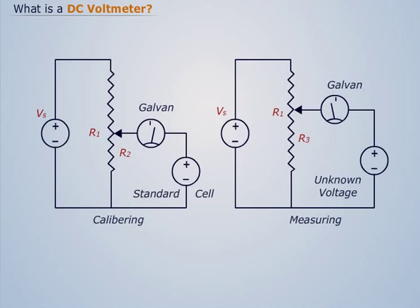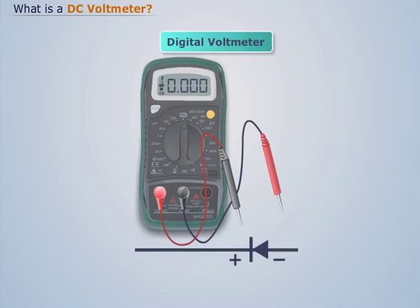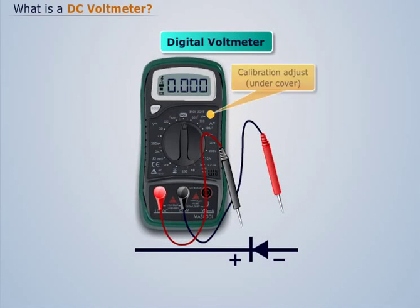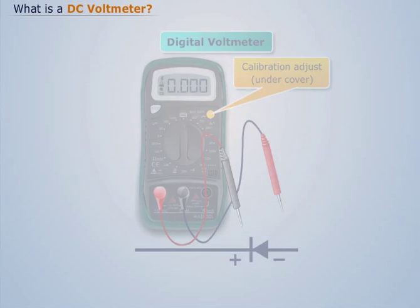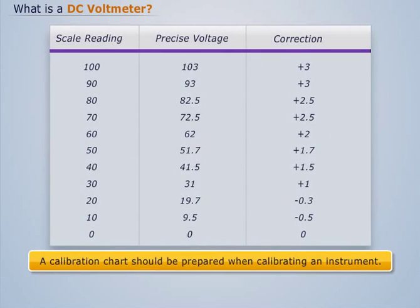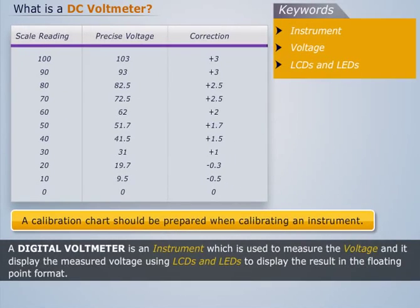A digital voltmeter can usually be adjusted for calibration. A calibration chart is useful for determining whether or not the instrument is within its specified accuracy.